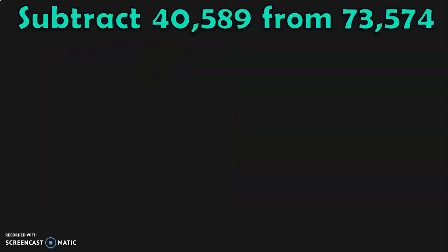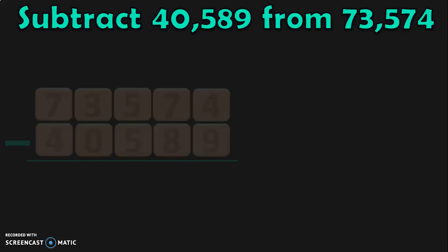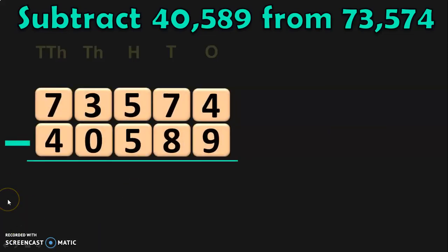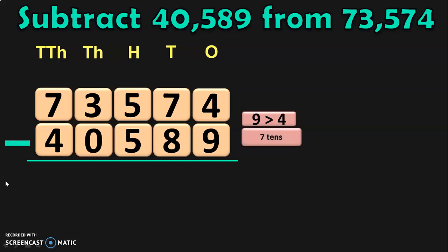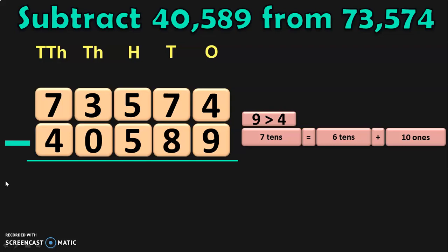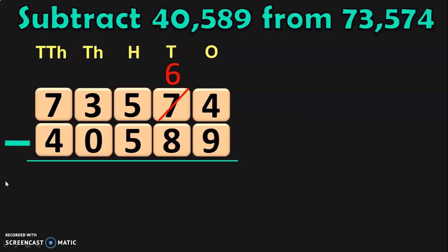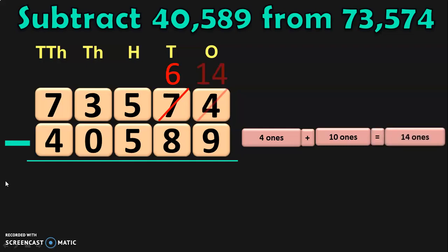Let us do the next sum now. Subtract 40,589 from 73,574. So, write down the numbers one below the other and write down the place values. Begin the subtraction from the ones place. Here, in ones place, we have 4 minus 9. We know that 9 is bigger than 4, so you will have to regroup the tens place. In tens place, you have 7 tens, which can be written as 6 tens plus 10 ones. Retain the 6 tens and take the 10 ones to the ones place. In ones place, you already have 4 ones. So, 4 ones plus 10 ones will give you 14 ones. You can subtract 14 minus 9 and get the answer to be 5.